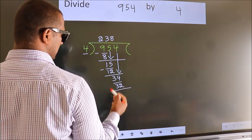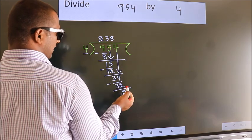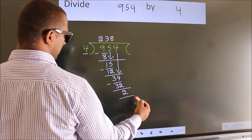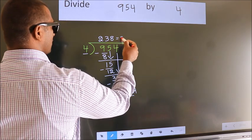Now, we subtract. We get 2. No more numbers to bring it down. So, we stop here. This is our remainder. This is our quotient.